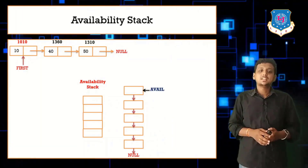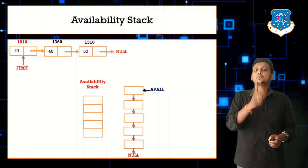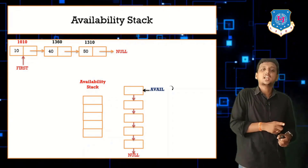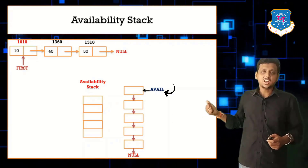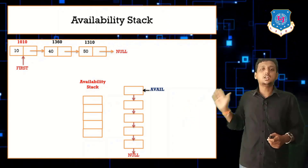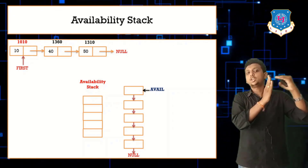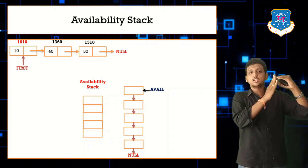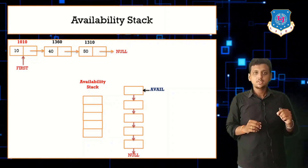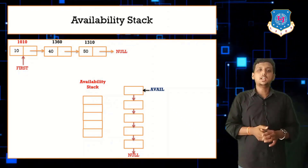What is avail? Avail is the topmost pointer in the availability stack — there is only one pointer, known as avail. Whatever the top pointer does in a regular stack, the same thing is done by avail. Right now, avail is pointing to the topmost node. If we remove that node, avail moves down to the next one. Avail is always pointing to the topmost element of the availability stack.